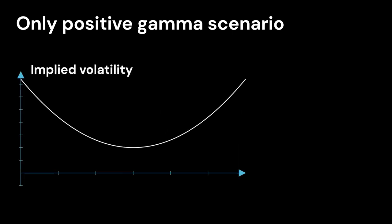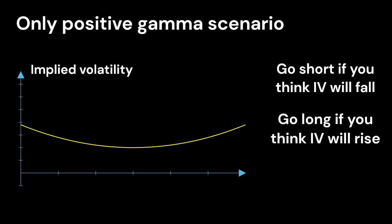Concerning vega, if we think that implied volatility will fall during the life of the option, we'll go short vega. So a fall in implied volatility will generate a rise in P&L. Otherwise, we'll go long vega.